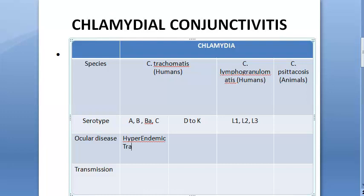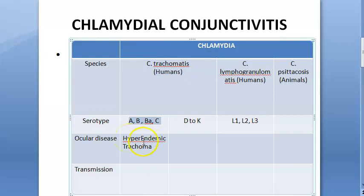Hyperendemic trachoma — the word is used only for Chlamydia trachomatis serotypes A, B, Ba, and C. Just remember A, B, C at least. Those serotypes of Chlamydia trachomatis cause trachoma in humans. Transmission for this is eye to eye.